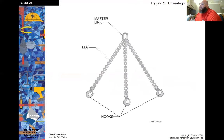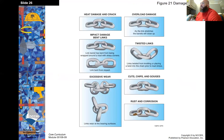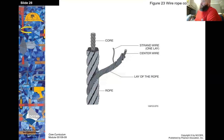The three-legged chain bridle has one master connection point, and then three hooks can be attached to something to be lifted. Wire rope slings must be inspected before each use. Here's a breakdown of the components of wire rope: you have a core, surrounded by smaller pieces of wire rope that are twisted — basically a center wire with smaller twisted wires around it — then twisted around the core to form the wire rope.